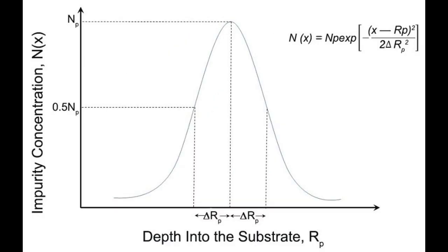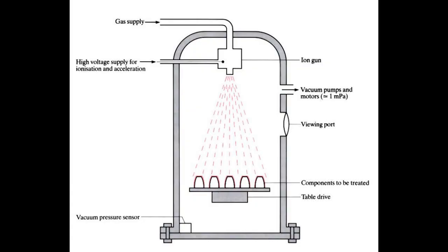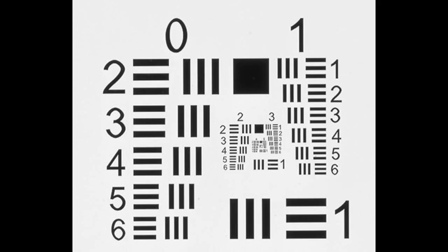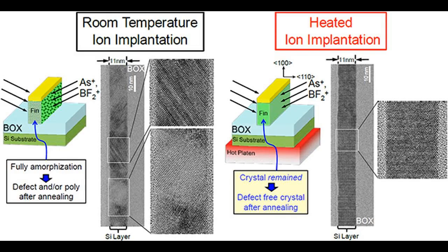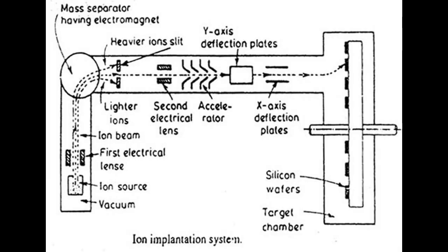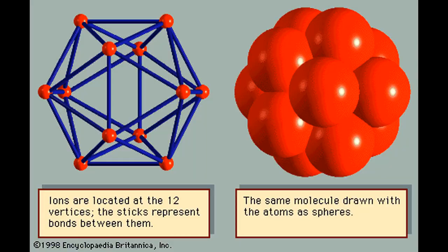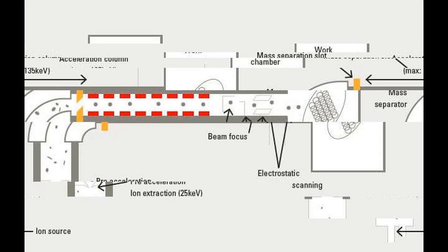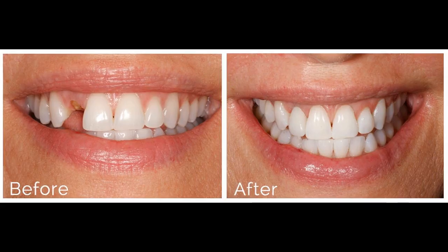Yttrium ion implantation into sapphire at an ion beam energy of 150 keV to a fluence of 5 × 10^16 Y per square centimetre produces an amorphous glassy layer approximately 110 nm in thickness, measured from the outer surface. The range of an ion can be much longer if the ion travels exactly along a particular direction, for example the channeling direction in silicon and other diamond cubic materials.